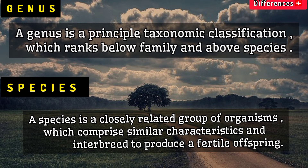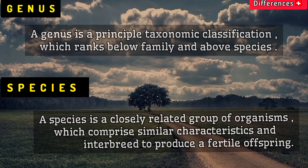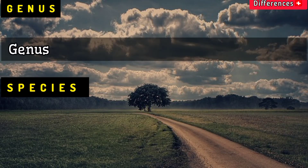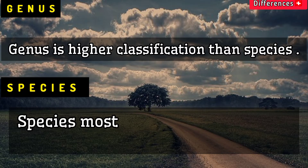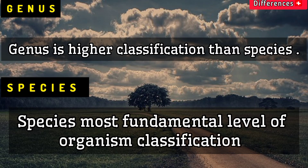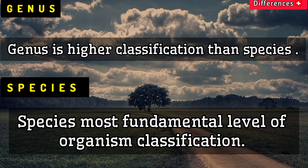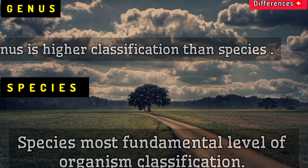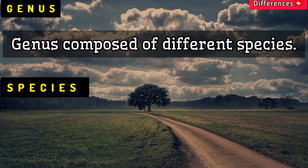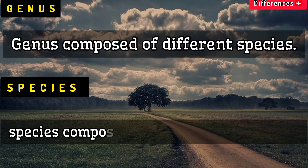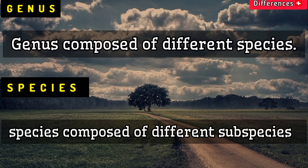Genus is a higher classification than species. Species is the most fundamental level of organism classification. Genus is composed of different species, while species is composed of different subspecies.